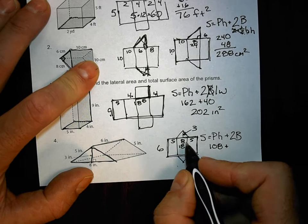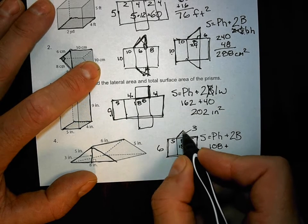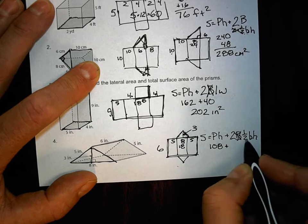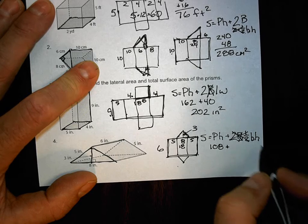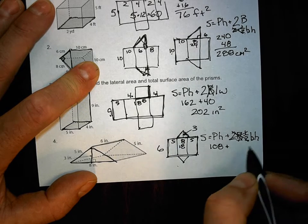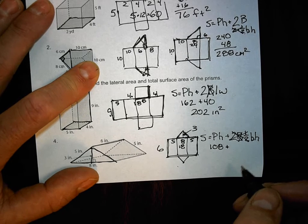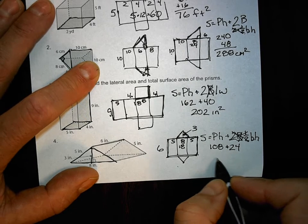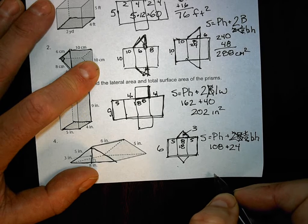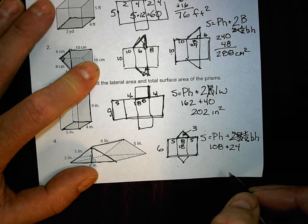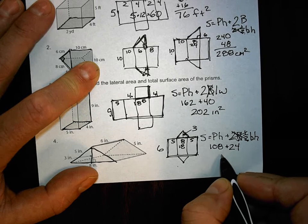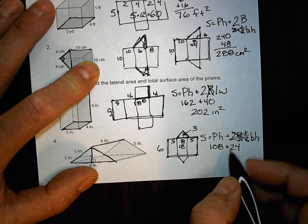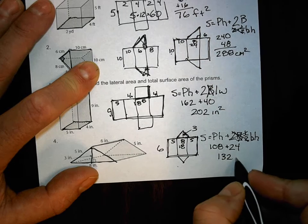Plus two times the area of the base. What kind of base do we have? A triangle. So what's the formula for the area of the triangle? One half base times height. Anything times one is itself, right? So the base is eight and the height is three. So what's eight times three? 24. Slow down. It's 24. So now I add 108 and 24. What did you get, Will? Plus 24. 204. What did you get, Gavin? 132. We go back and bring our inches in. Inches squared.